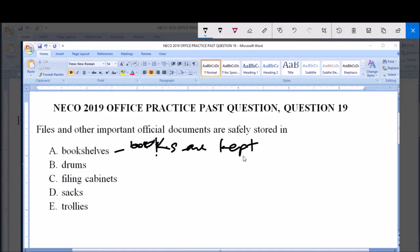Now B. drums - drums is not used for storing files and other important official documents. D says sacks, which is wrong, and E says trolley. Trolley is not used.